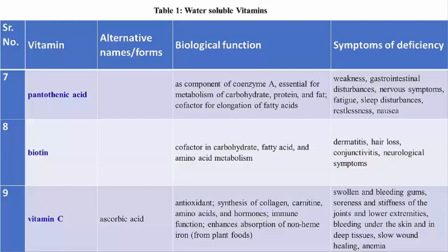Vitamin C (ascorbic acid) is important for regulation of antioxidants, synthesis of choline, carnitine, amino acids and hormones, and immune functions. It enhances absorption of non-heme iron from plant foods. Deficiency leads to swollen and bleeding gums — known as scurvy disease — soreness and stiffness of joints, bleeding under the skin and deep tissues, slow wound healing and anemia.